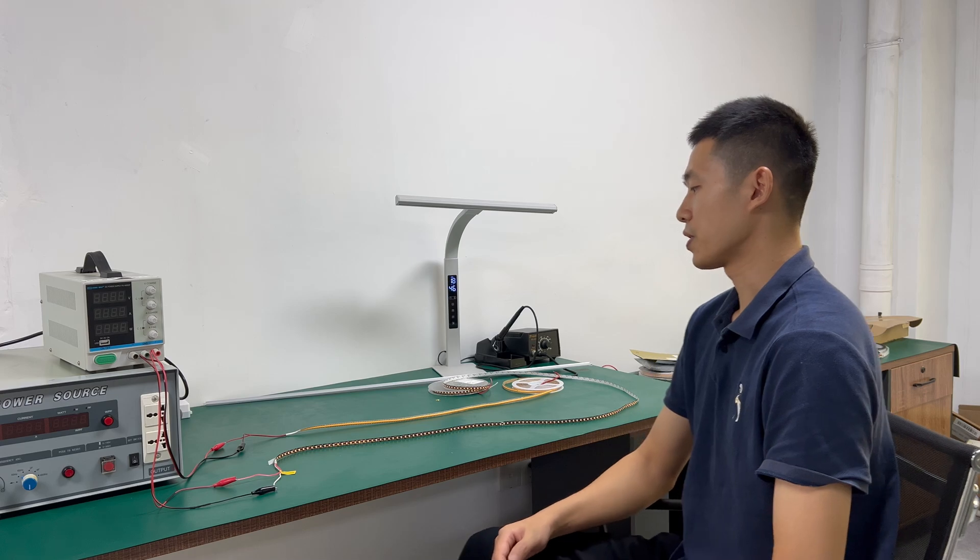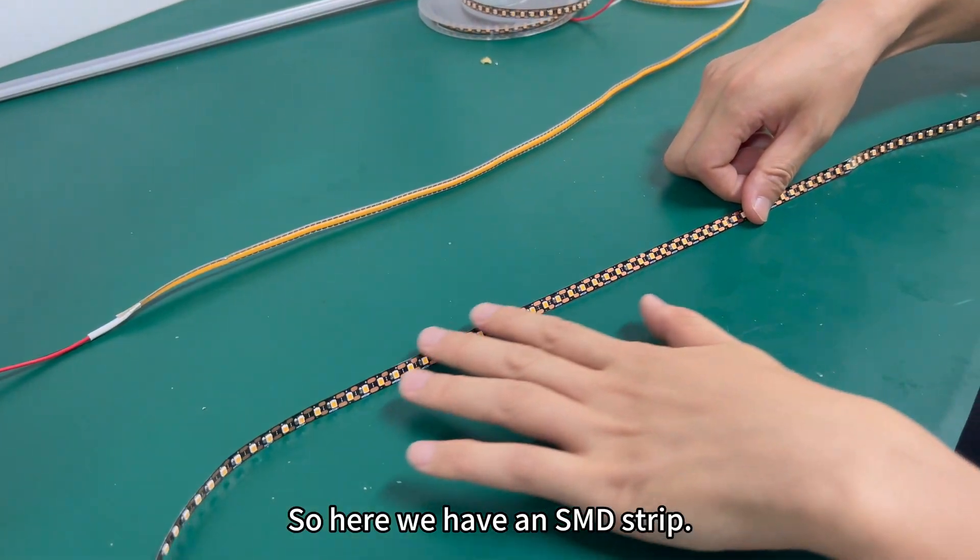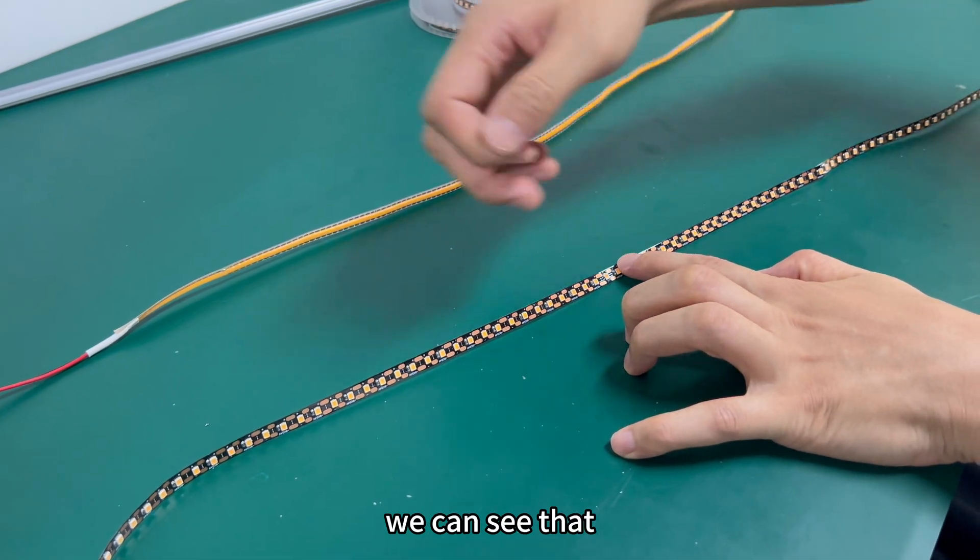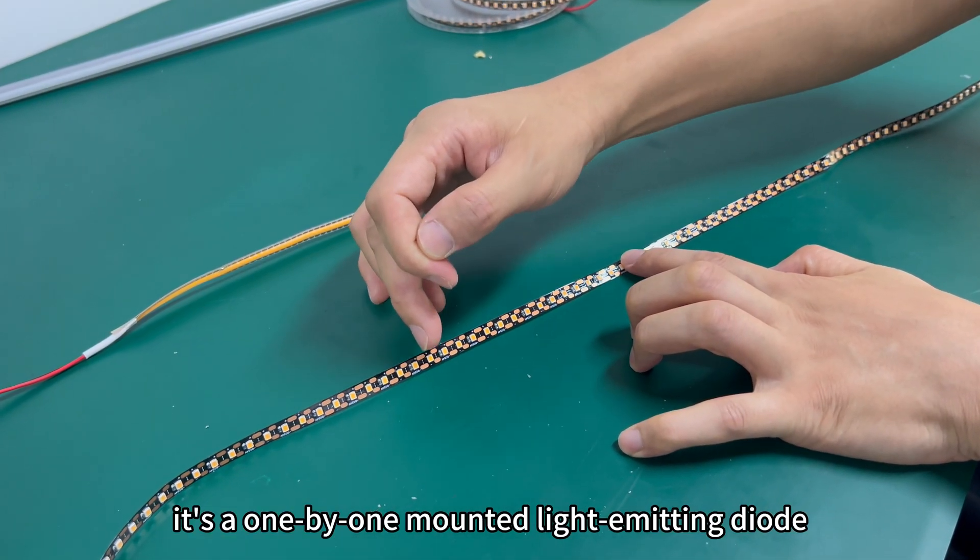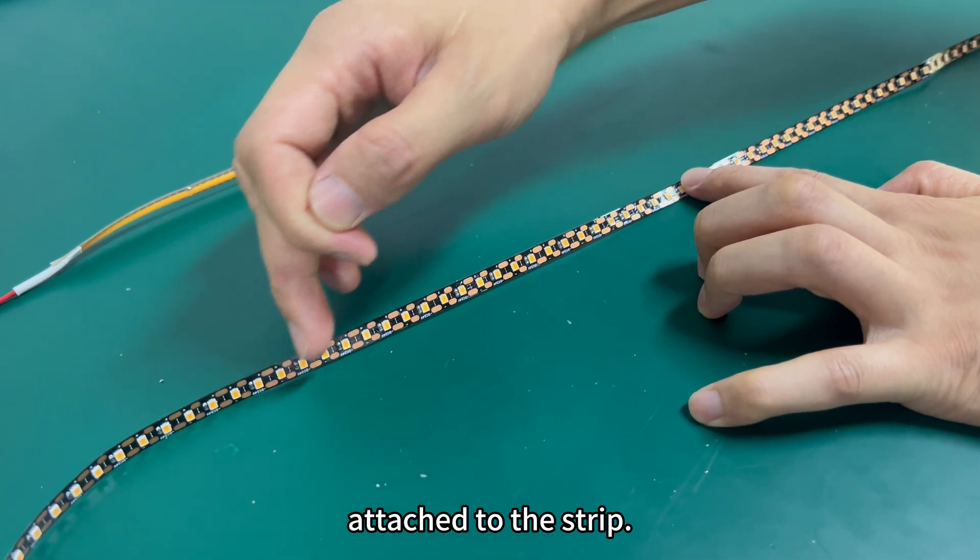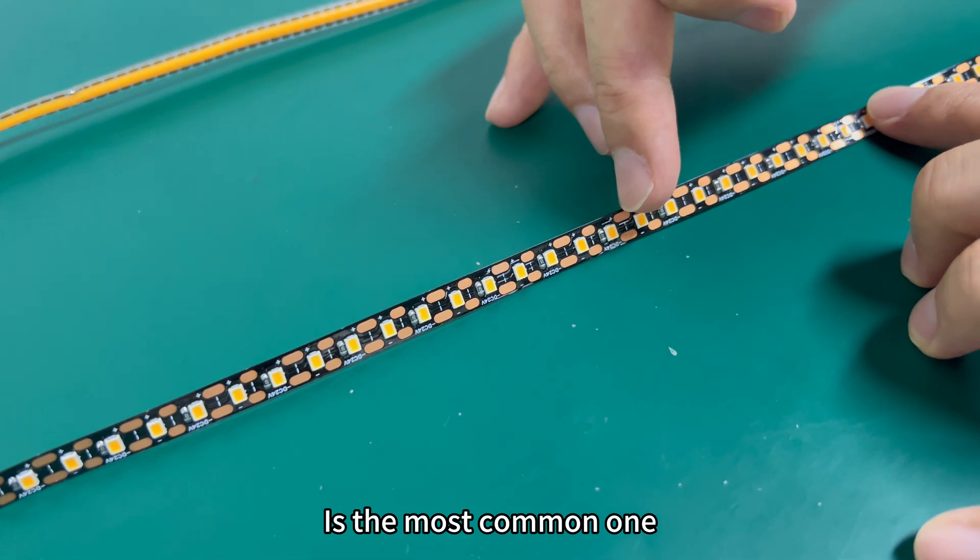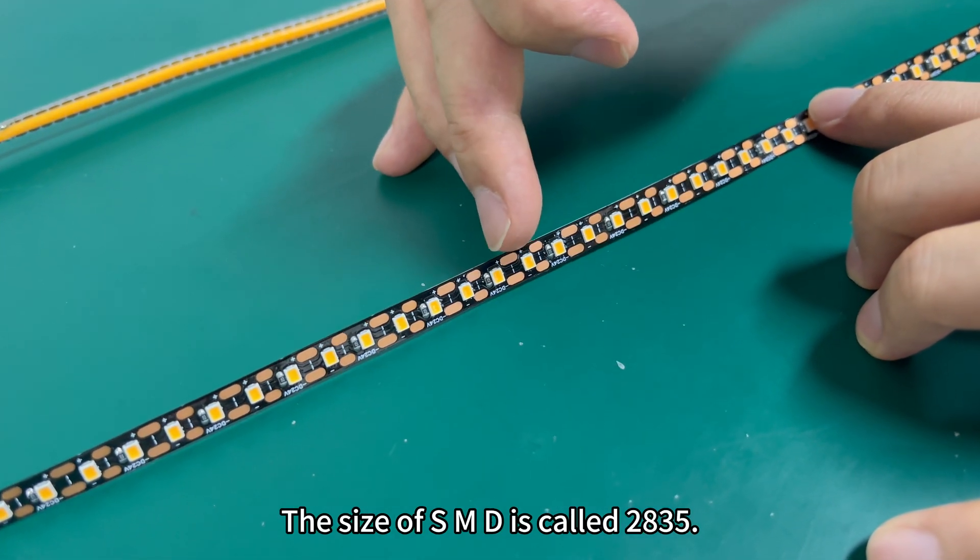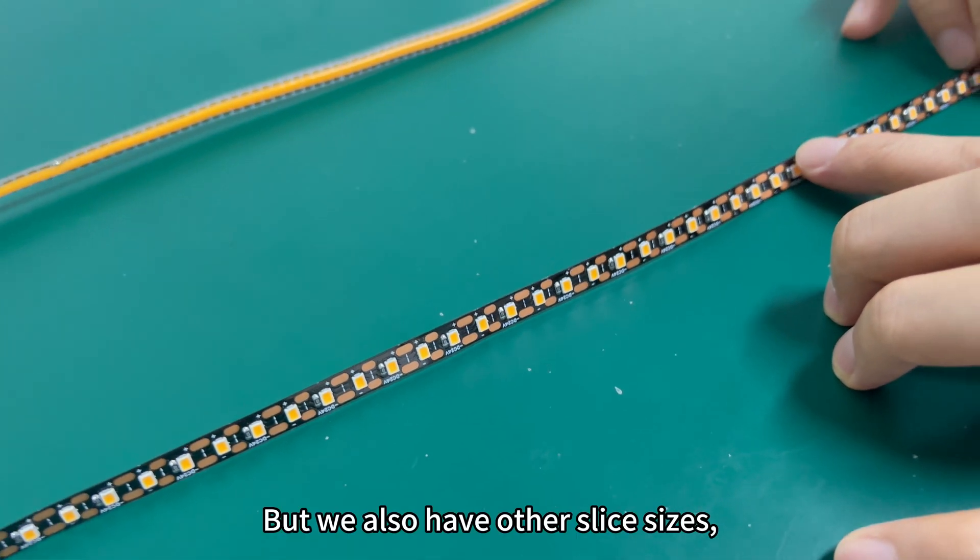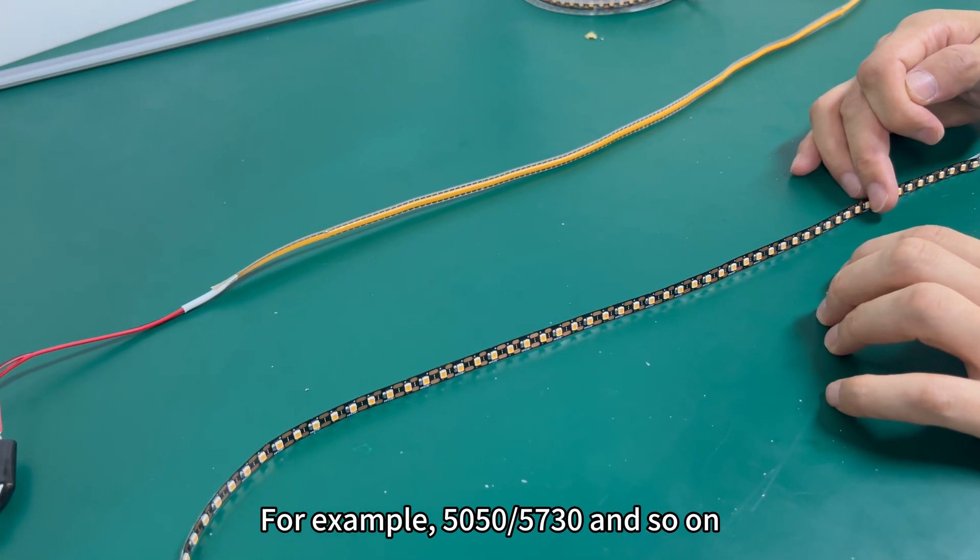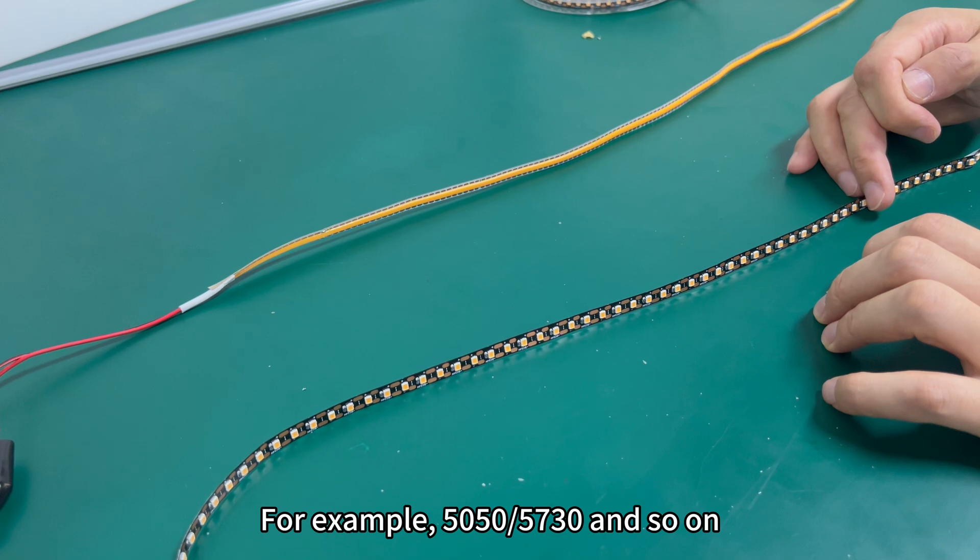Let's look now. So here we have an SMD strip. What is SMD strip light? We can see that it's a one-by-one mounted light emitting diode attached to the strip. This is what we are looking at now, the most common one. The size of SMD is called 2835. But we also have other sizes, for example, 5050, 5730, and so on.